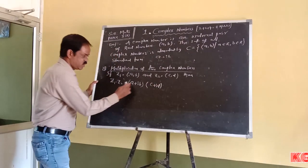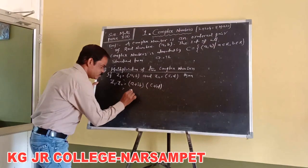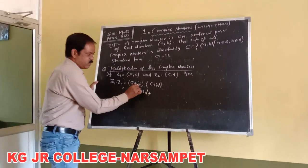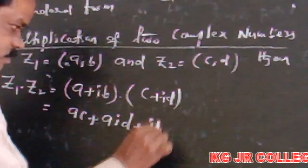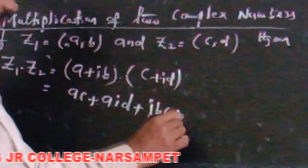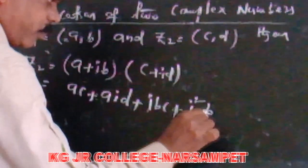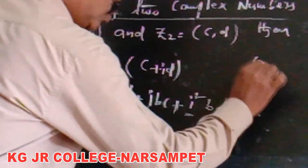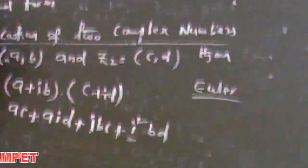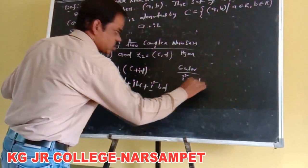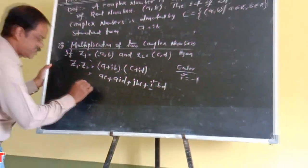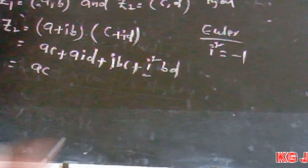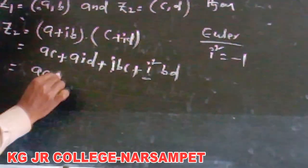How to multiply? First: a × c = ac. Next: a × id = aid. Next: ib × c = ibc. Next: ib × id = i²bd. All of you observe here — i² value, according to Euler's/standard mathematics, i² is equal to minus one. So i² becomes minus one, and it becomes −bd.